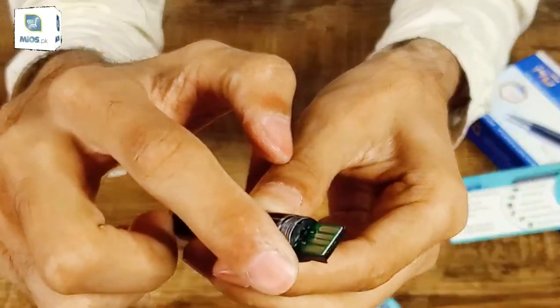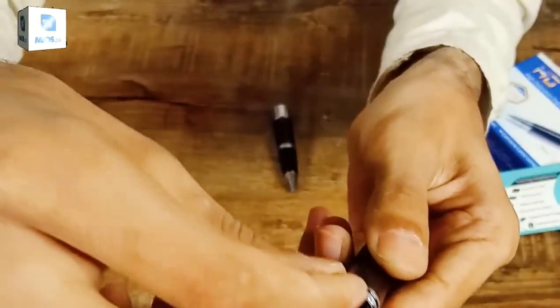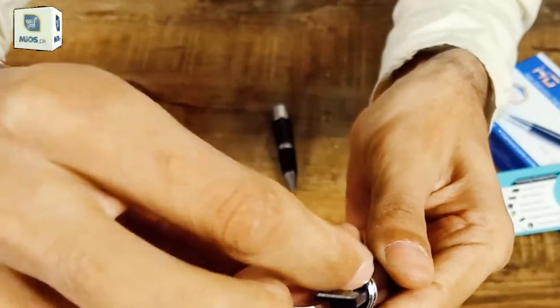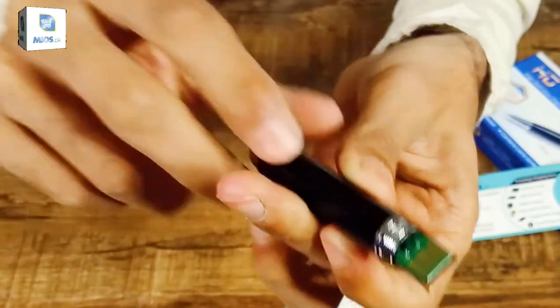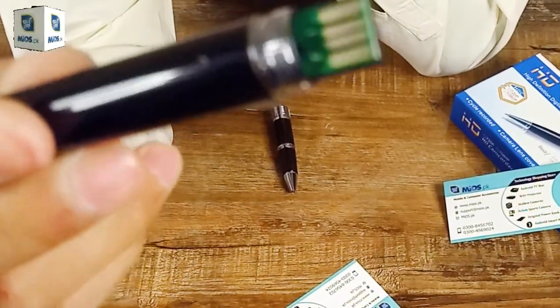For video recording, you have to move the button to position two. If you click on it, the mode will be changed. Before it was audio recording, now it will be converted to video recording.